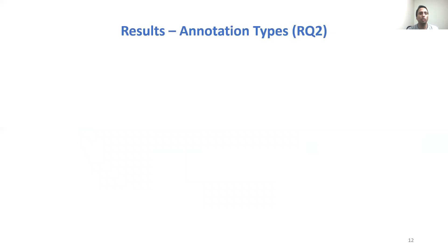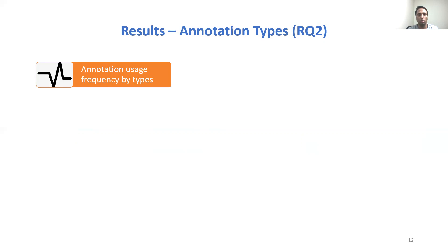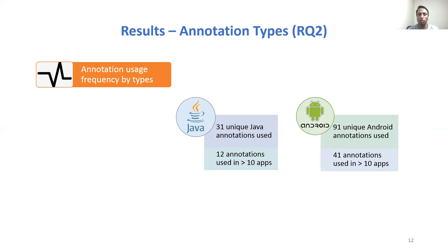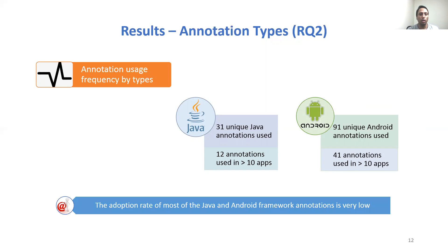We further investigated annotation use frequency by type. We found 31 unique Java annotations in the studied apps, of which only 12 are used in more than 10 apps. We also found 91 unique Android annotations, of which only 41 are used in more than 10 apps. So less than half of the Java and Android annotations are used in more than 10 apps, indicating that the adoption rate for most Java and Android framework annotations is very low.